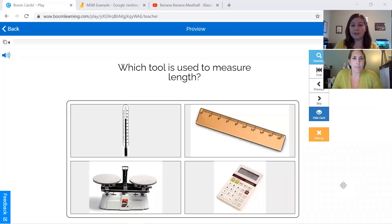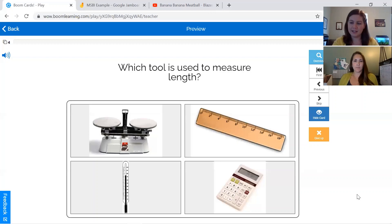First, I'm going to model the zero second time delay portion of the constant time delay procedure. So I'm going to read the question to Melissa and then immediately prompt her to select the correct icon by hovering over the correct Boom Card on my screen. Melissa on her screen will also see the card highlighted and then she'll know to click on that. Let's get started.